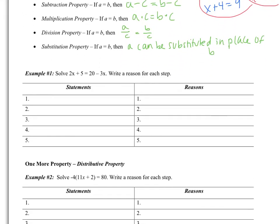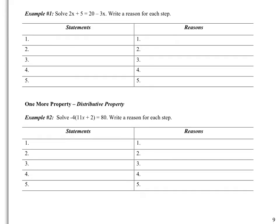Moving on to example number one. It says solve and then write a reason for each step. The first statement is always the equation that you are given. So: 2X plus 5 equals 20 minus 3X. The reason is just given.